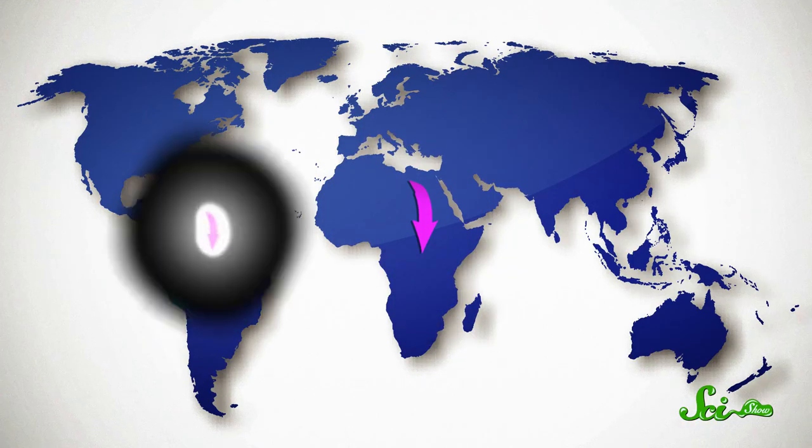Biologists believe that electrogenesis has evolved separately at least 11 different times in places as isolated from each other as the African interior, the Amazon basin, and the coral-rich waters of Australia.